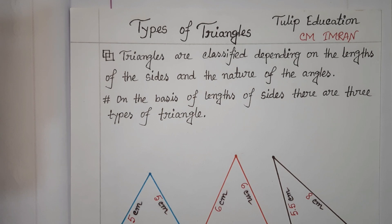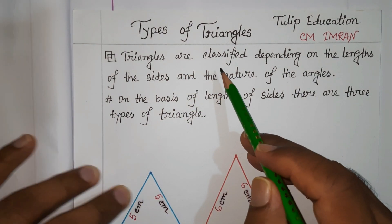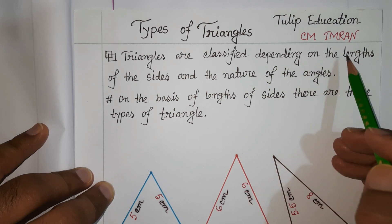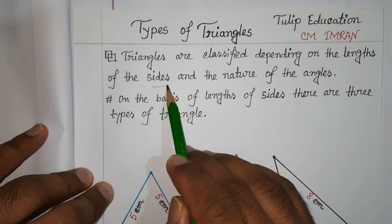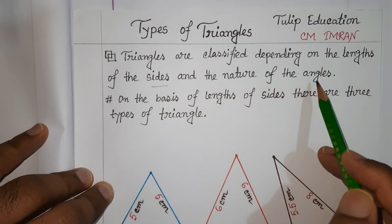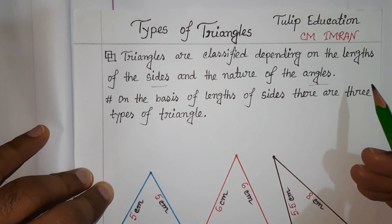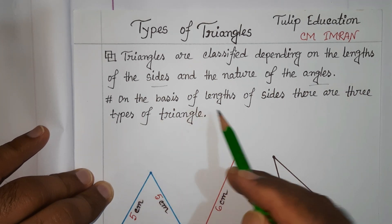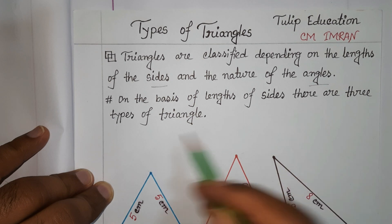Hello friends, welcome to today's tutorial. Today we are going to learn about the types of triangles. In our previous tutorial we learned the definition of triangle and the important properties of triangle. Triangles are classified depending on the lengths of the sides and the nature of the angles. On the basis of the lengths of sides, there are three types of triangle.